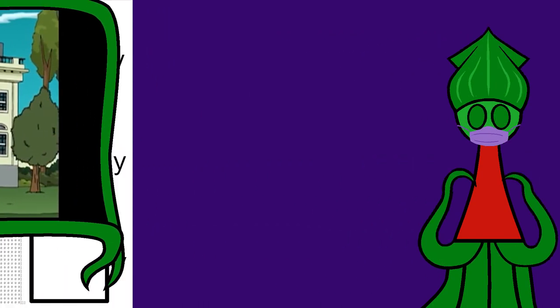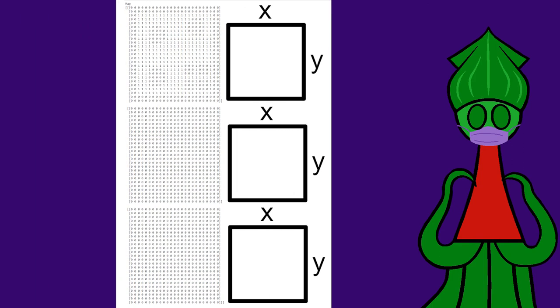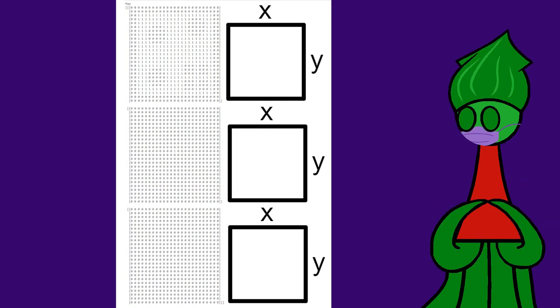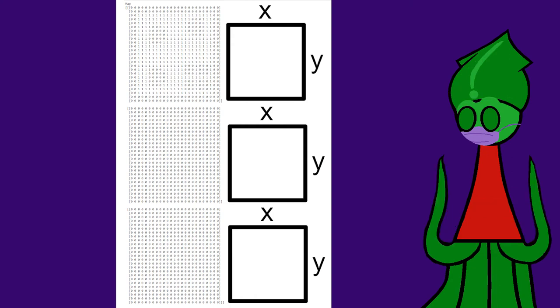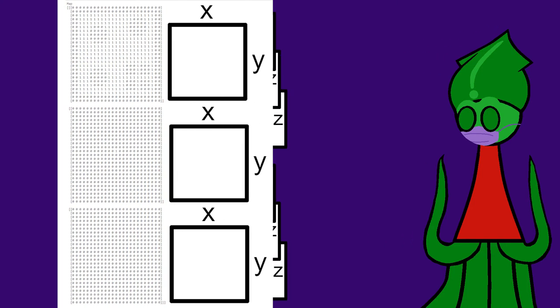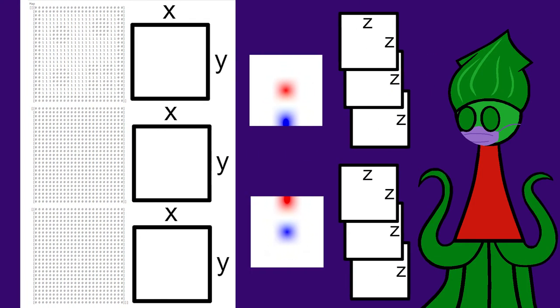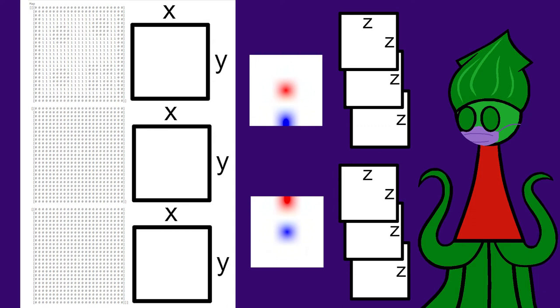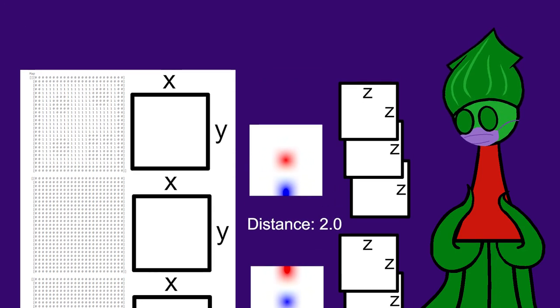So let's stretch this out to the predator and prey. The reality here is bigger than two states, food or no food. There is a whole 3 by x by y matrix of zeros and ones. The observations are bigger than Boolean, too. The predator and prey both have a 3 by z by z matrix of zeros and ones, and they can tell how far apart they are from the other agent.